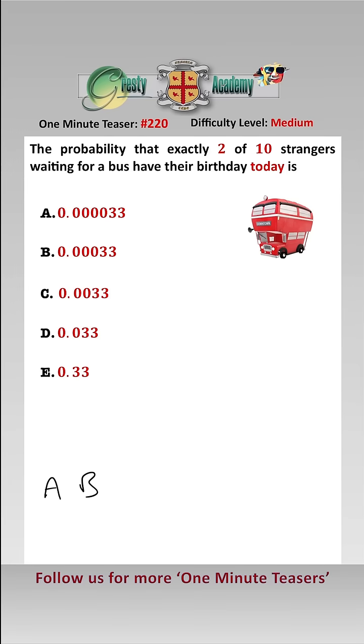So let's call the 10 strangers A, B, C, D, E, F, G, H, I, and J.